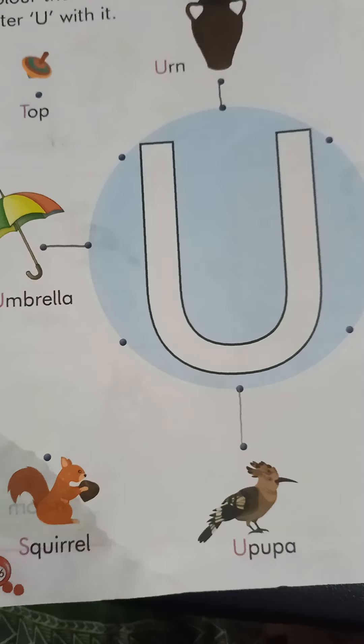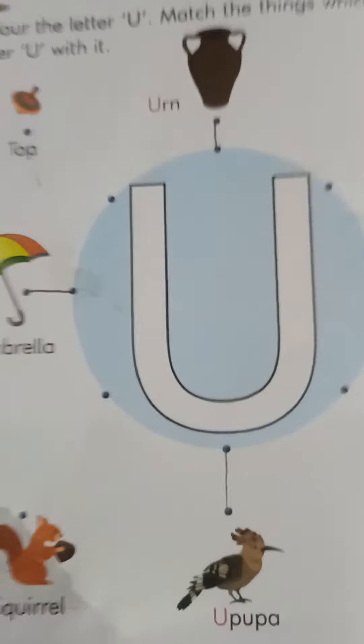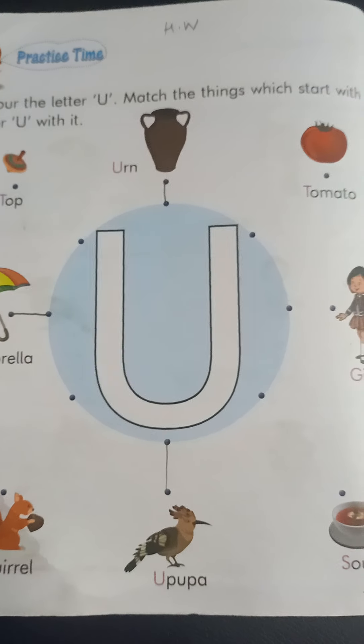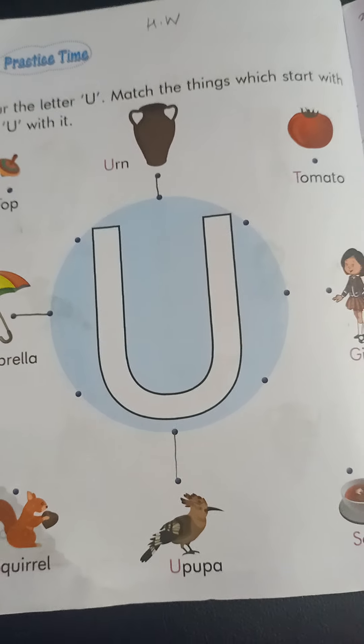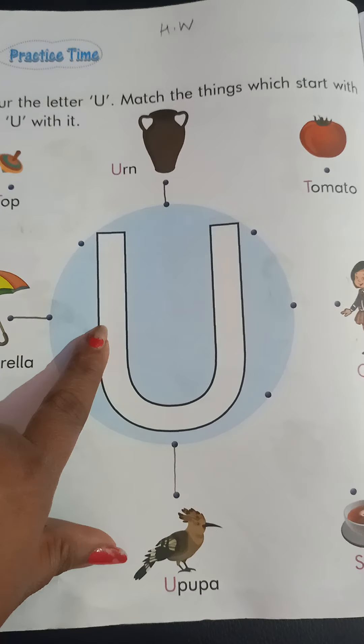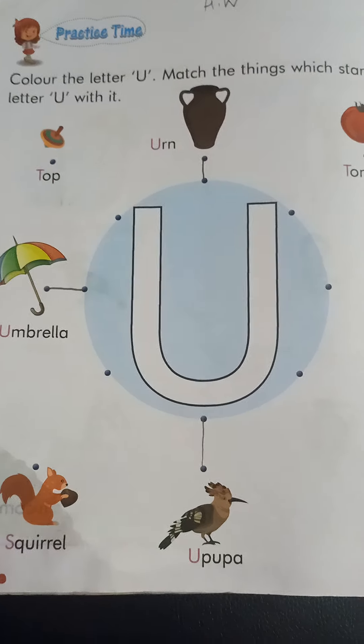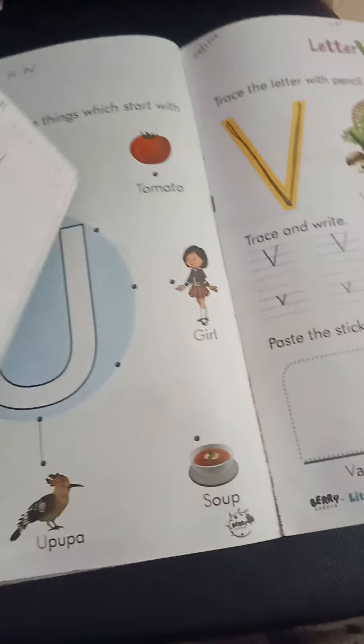Here is the homework for you. Write HW, then color the letter U. Match the things which start with U — match the words starting with U with the letter U, and color it as well. Also in your English notebook, write T for tortoise, capital T and small T, as well as U for umbrella, capital U and small U.